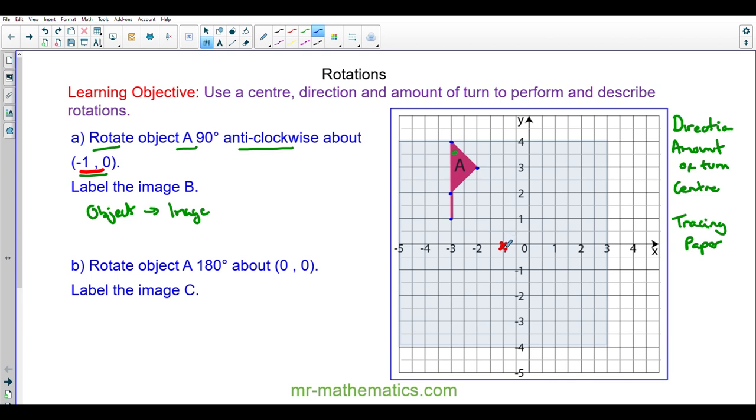And next I'm going to mark a 90 degree angle at our center. So the rotation is complete when we've moved 90 degrees. And I will take the tracing paper about the center 90 degrees anti-clockwise. And all I do now is recreate the object using the vertices. And now we have our image which I'm going to label B.